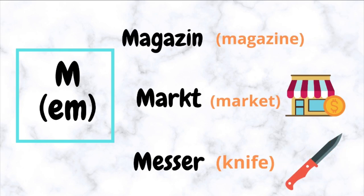M (Em) — for example: Magazin, Markt, Maakt.